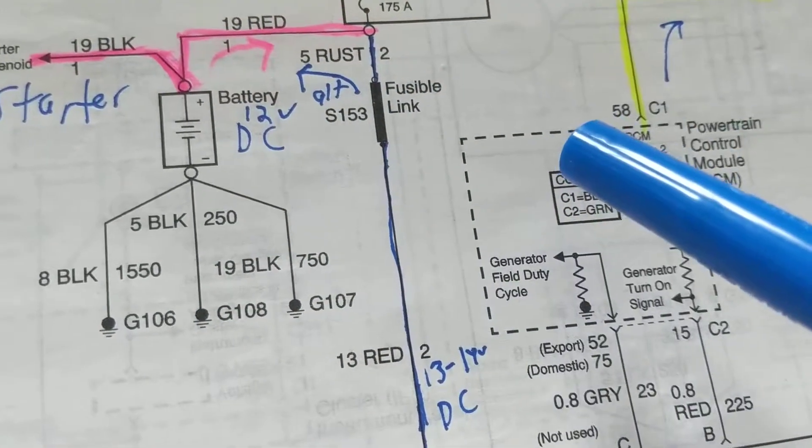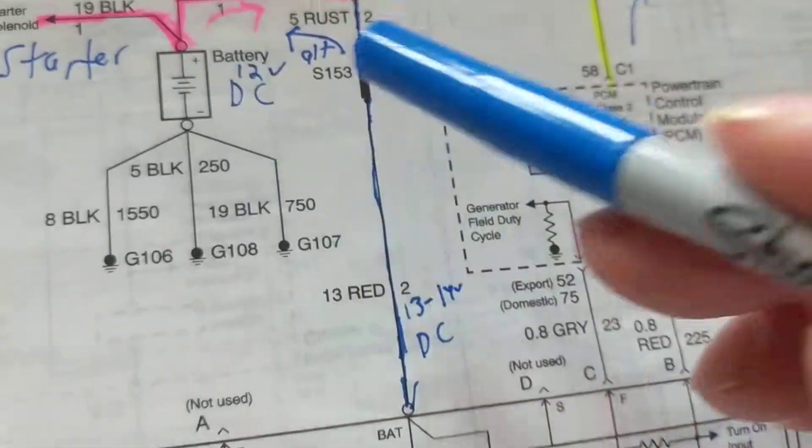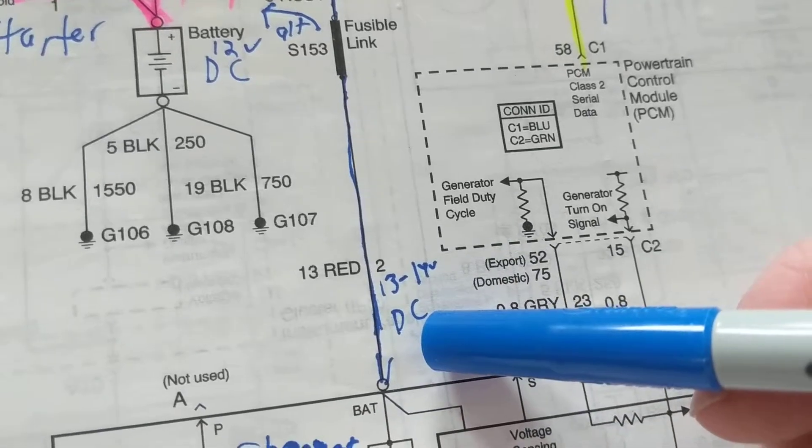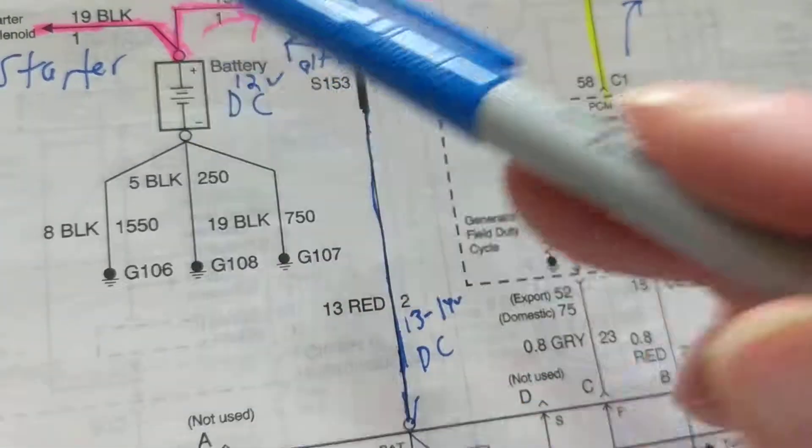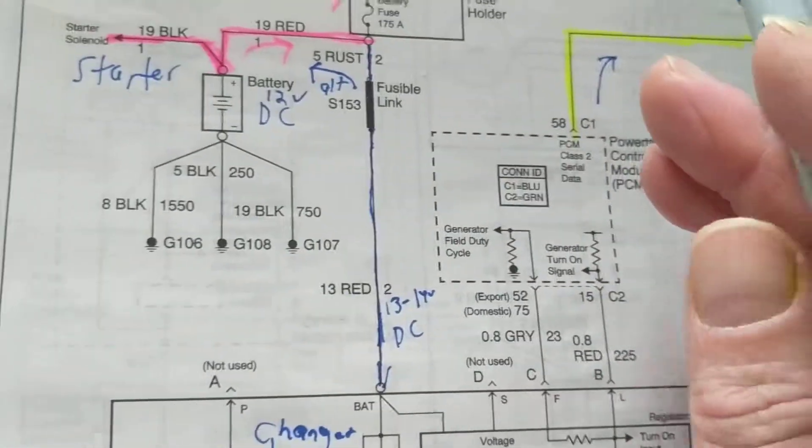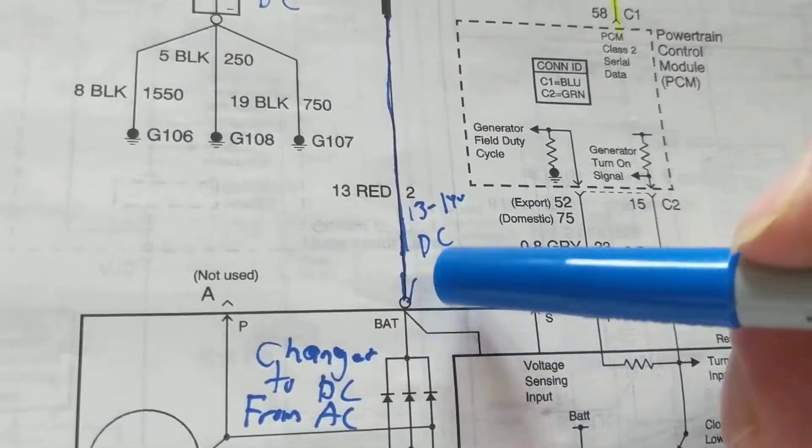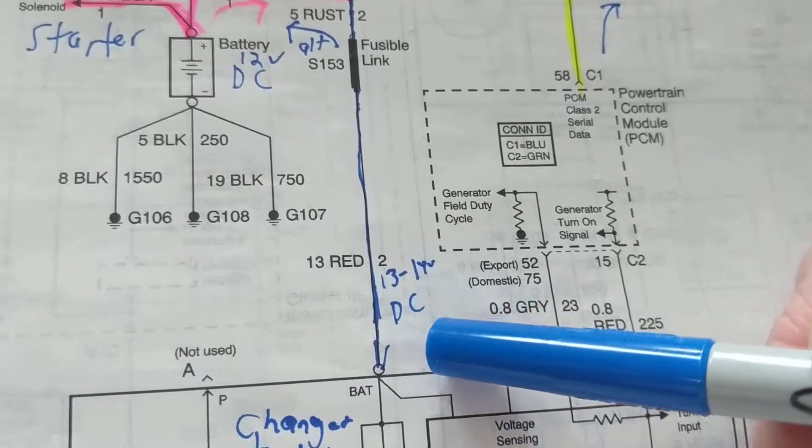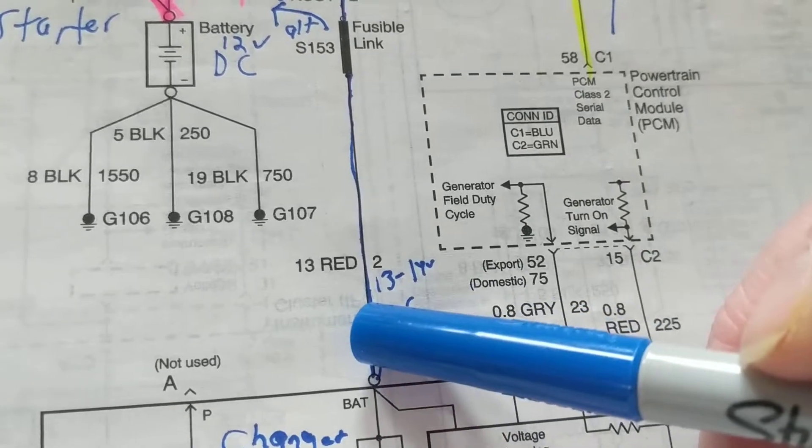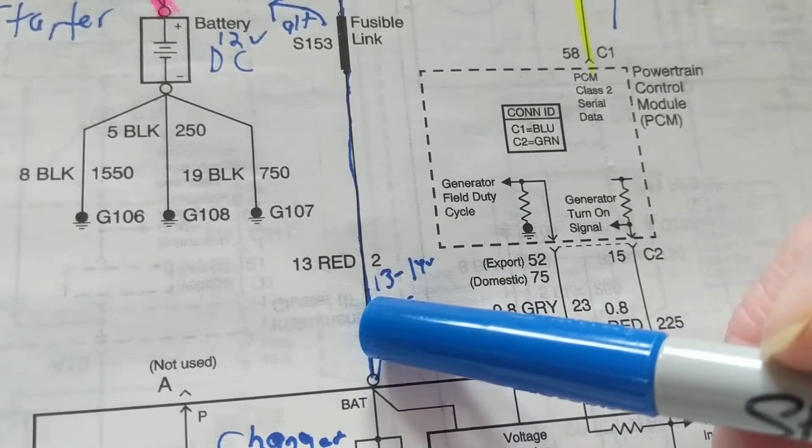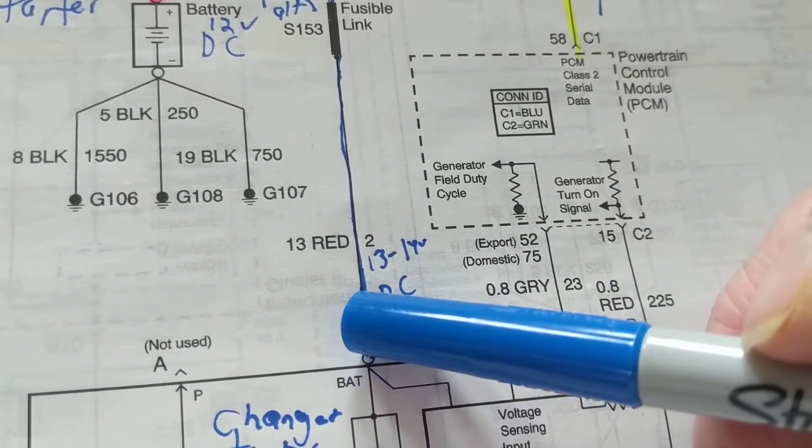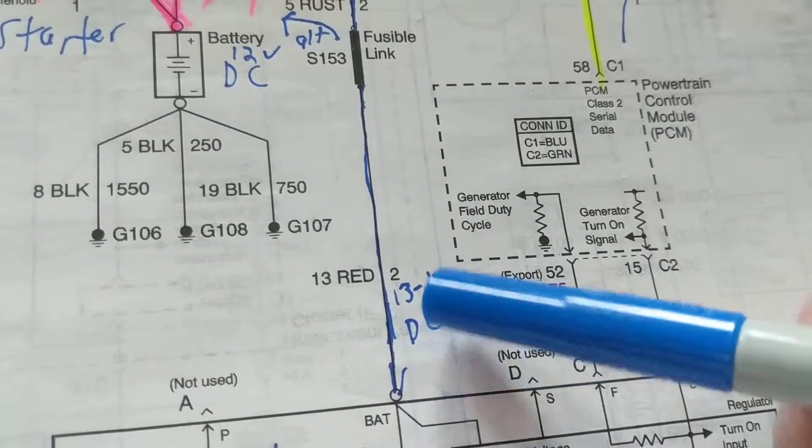Two things: AC has to be changed to DC to charge a DC source. Number two, we cannot charge something at the same voltage. If you notice, when you charge something, you always have to be at a higher voltage. So 13 to 14 volts is enough to charge the battery. We cannot charge 12 volts with 12 volts. Even your phone charger can't charge something at the same level - it has to be higher. But we cannot overcharge. If it's 11 volts, we get a code and have to put the scanner on. If it's undercharged at 11 or overcharging at 16, that's not good for the battery.